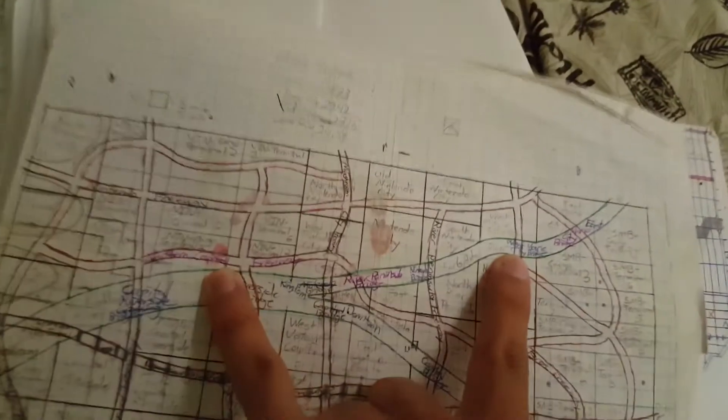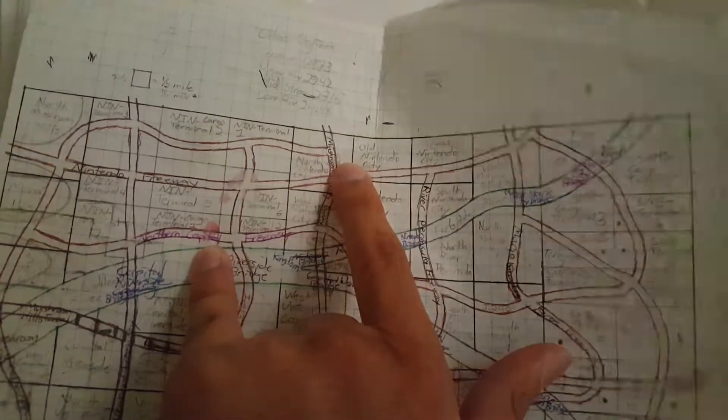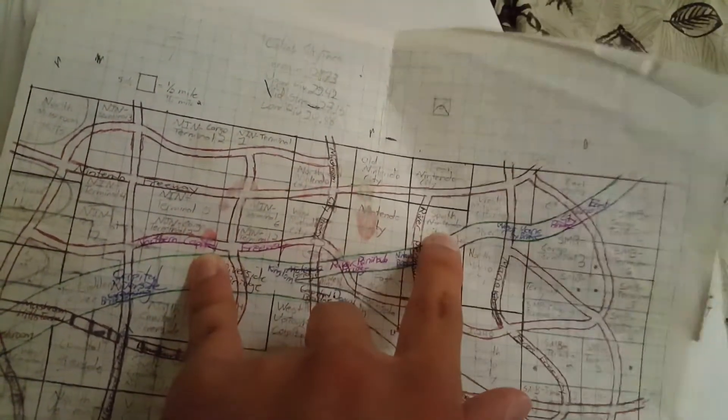Correction, this is actually the truth. This is Nintendo City right here: West Nintendo City, North Nintendo City, Old Nintendo City, East Nintendo City, and South Nintendo City.